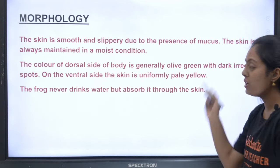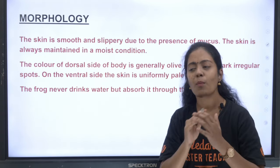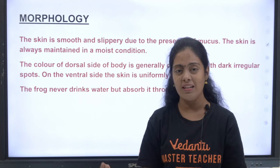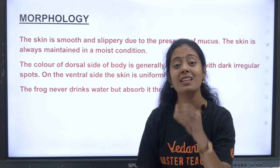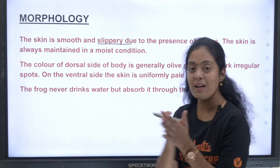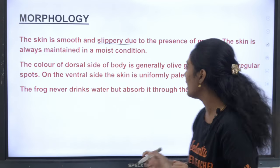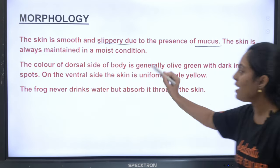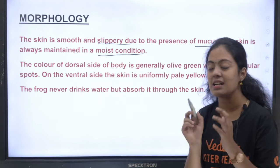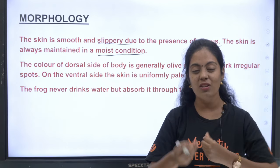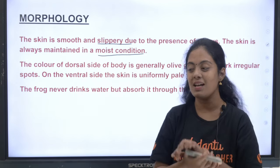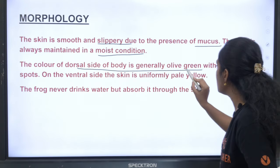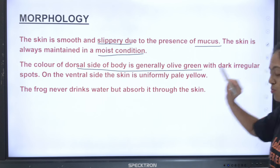Now morphology. The skin of the frog is very smooth and slippery. Due to the presence of mucus, the skin is always maintained in a moist condition. The colour of the dorsal side of the body is generally olive green with dark irregular spots.